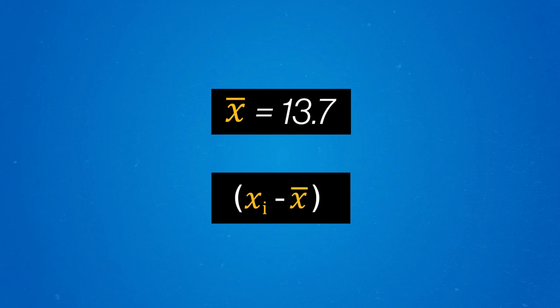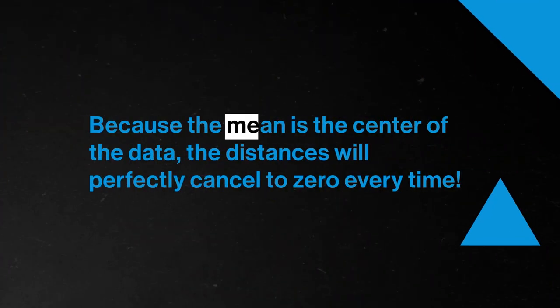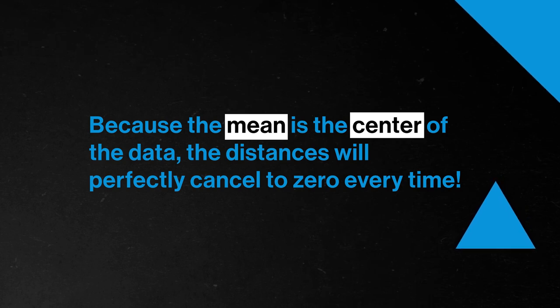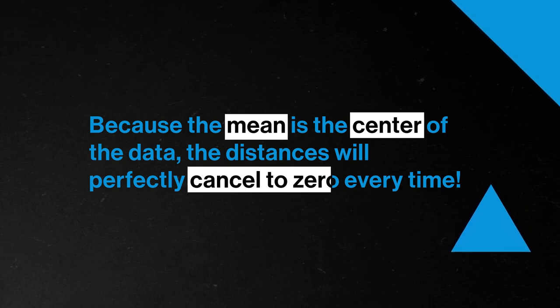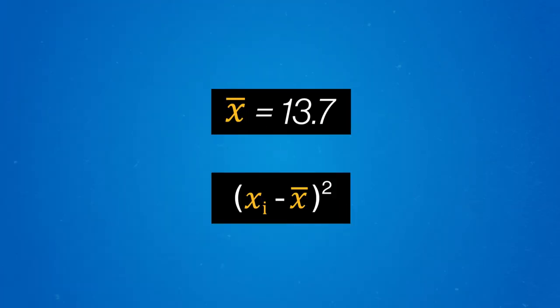Then we do something that might seem a little like math magic — we square each distance. We square each distance because otherwise the distances could be both positive and negative, depending on whether the point was greater or smaller than the mean. And if we try to take the average, when we add them up, stuff would cancel out. In fact, because the mean is the center of the data, the distances will perfectly cancel to zero every time. So instead, we square each distance, giving us only positive numbers.